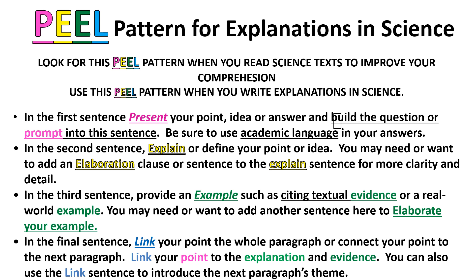The second sentence is an Explanation, and that explanation is usually based on a definition — so there'll be 'is' or 'are' as the verb in the sentence. Or the explanation can be naming certain characteristics of that entity, in which case the sentence will have the verbs 'has' or 'have' in it. You may want to elaborate on your explanation with a second sentence or with another clause.